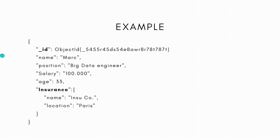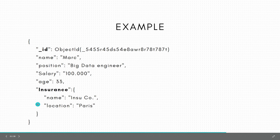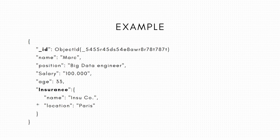In MongoDB objects, you have the underscore _id field, which is the identifier of the whole object. It is most of the time automatically created by the database, but you can also define a custom mechanism for creating it depending on what you want. You can just create a document inside the employee collection, for example, with fields like position, name, salary, or age — or without any of them depending on what kind of data you have.